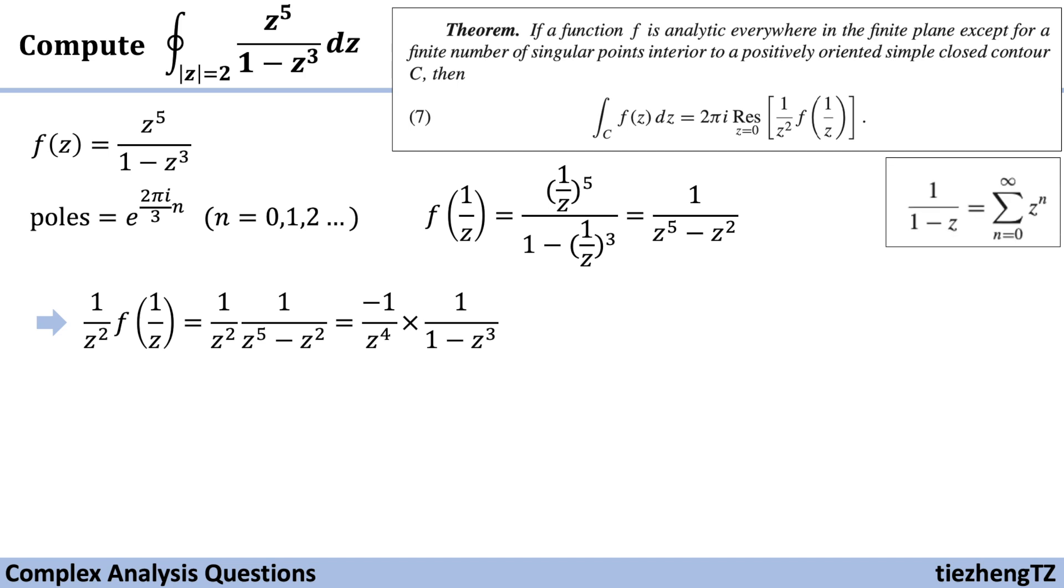So now we have -1/z^4 times the sum from n=0 to infinity of (z^3)^n. And doing some simple optimization, we have minus sum from n=0 to infinity of z^(3n-4).